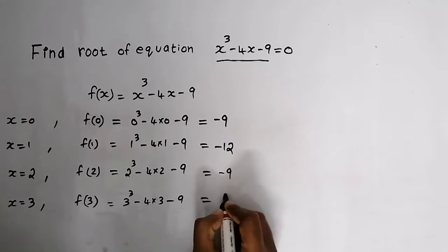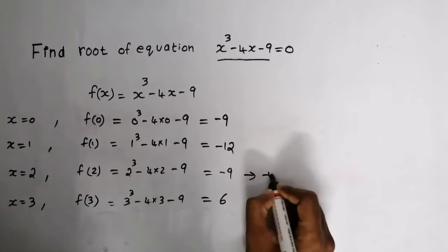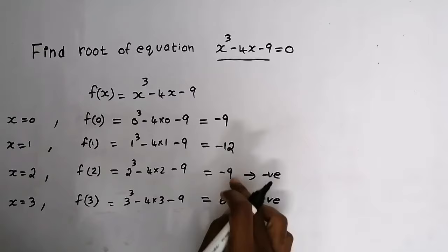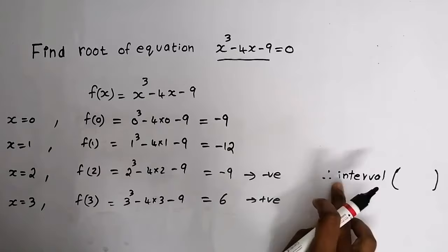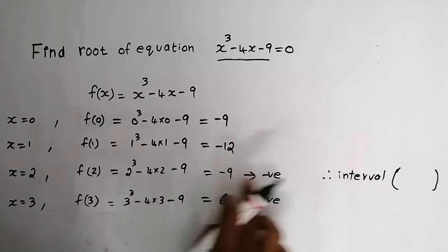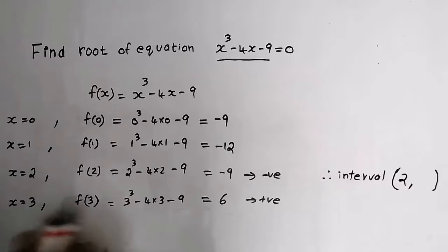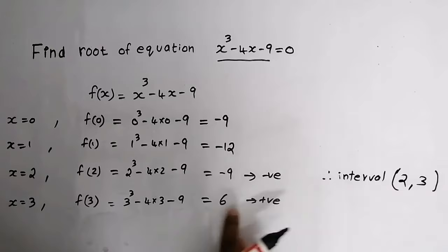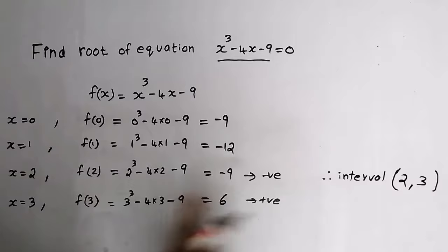Now we can see here this is a negative value and here it is a positive value. We need to get adjacent negative and positive values. So our interval will lie between the negative and positive values — our interval will be x = 2 and x = 3, giving us the interval [2, 3].